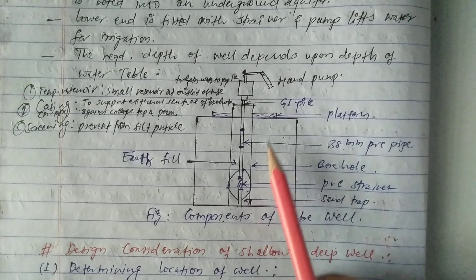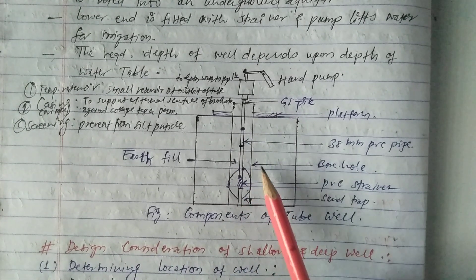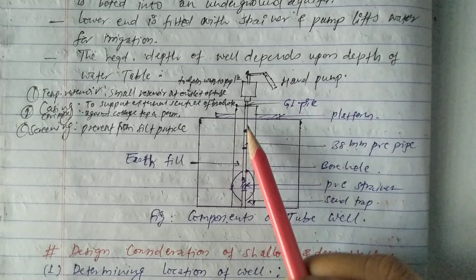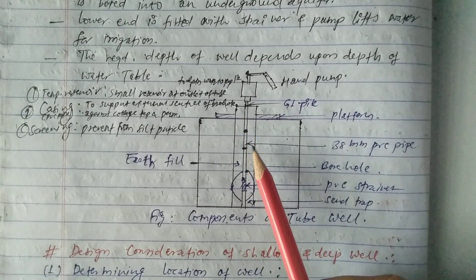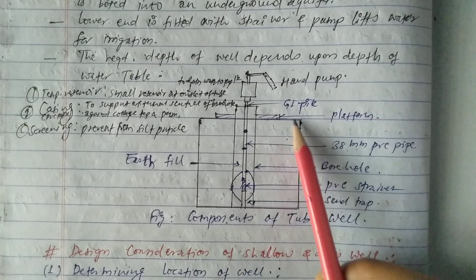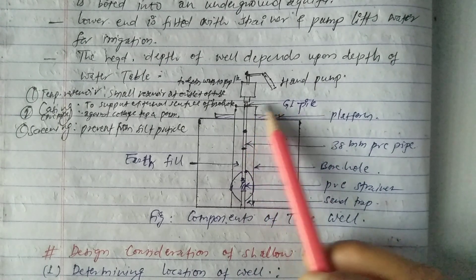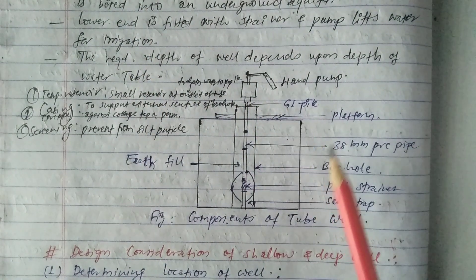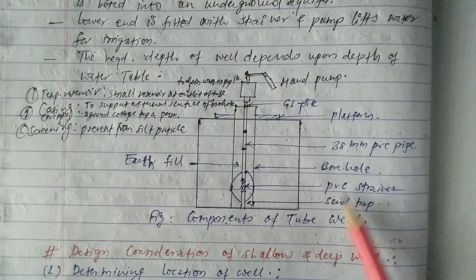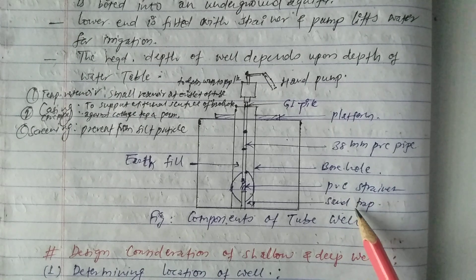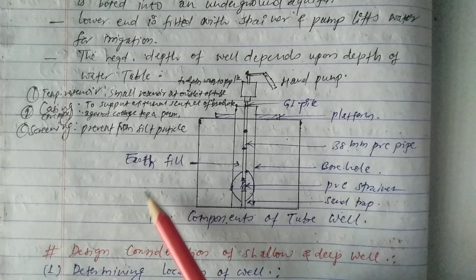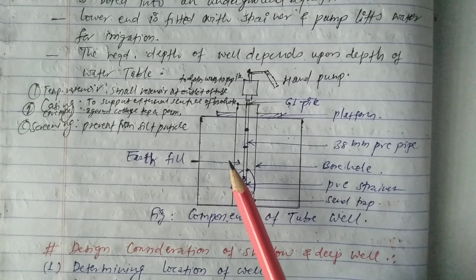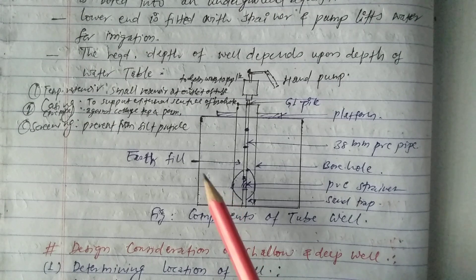Basically we have different components of tubule. You can see in this figure — I have made this figure very clearly. The components of tubule shown are: GI pipe, platform, borehole, PVC strainer, and sand trap.